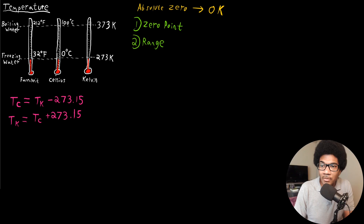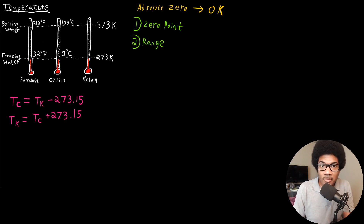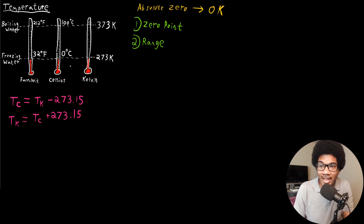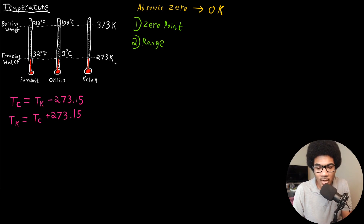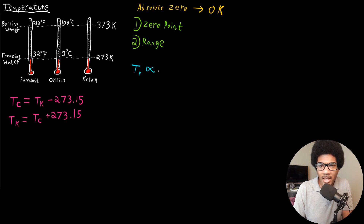Now let's look at the conversion from Celsius to Fahrenheit. This one is a little more involved because not only is the zero point different — zero Celsius is 32 degrees Fahrenheit — but the range is also different. The boiling point of water is 212 degrees Fahrenheit, which is more than 100 degrees Fahrenheit above freezing. However, we do notice there is a proportionality between them: as the temperature in Celsius increases, the temperature in Fahrenheit increases as well, so they're directly proportional and we can get an equation to convert between the two.